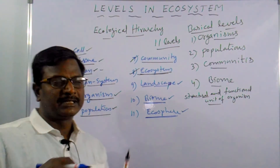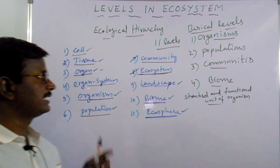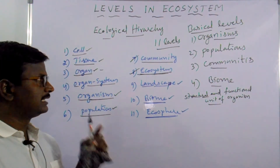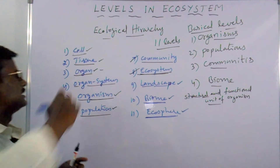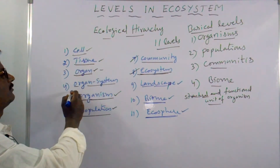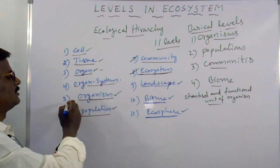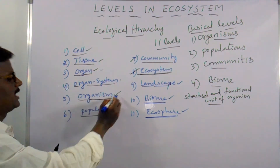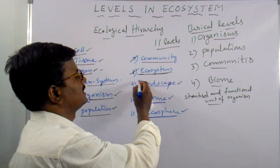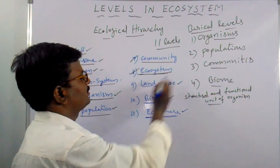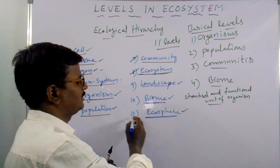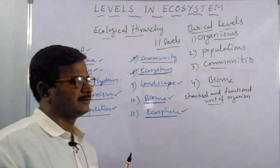This ecological hierarchy has 11 levels: the first is cell, second is tissue, third is organ, fourth is organ system, fifth is organism, sixth is population, seventh is community, eighth is ecosystem, ninth is landscape, tenth is biome, and the eleventh is ecosphere.